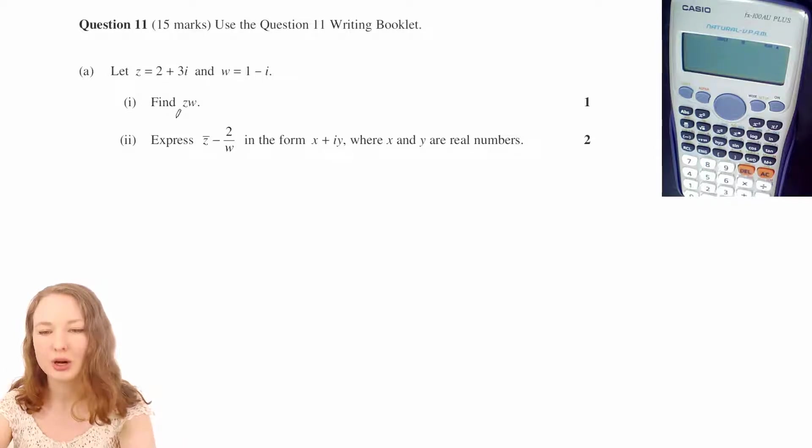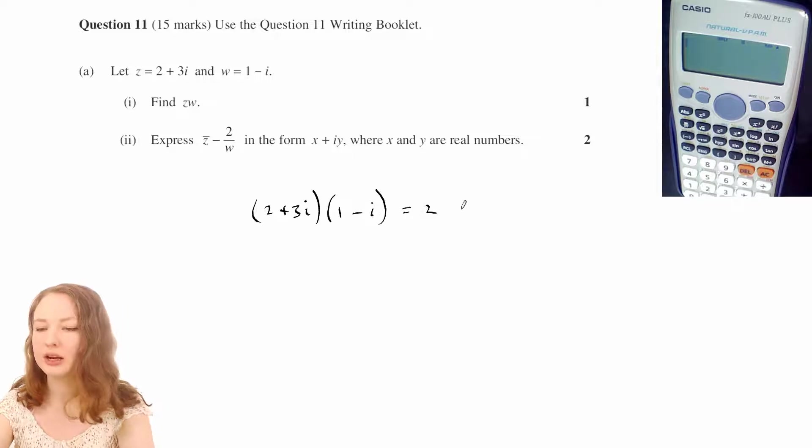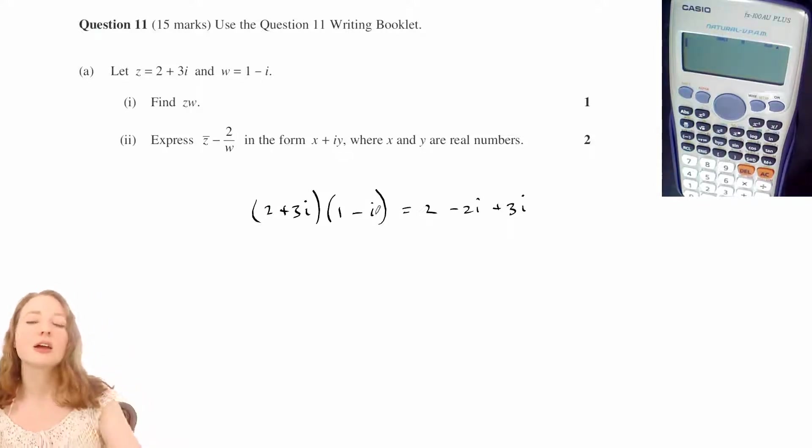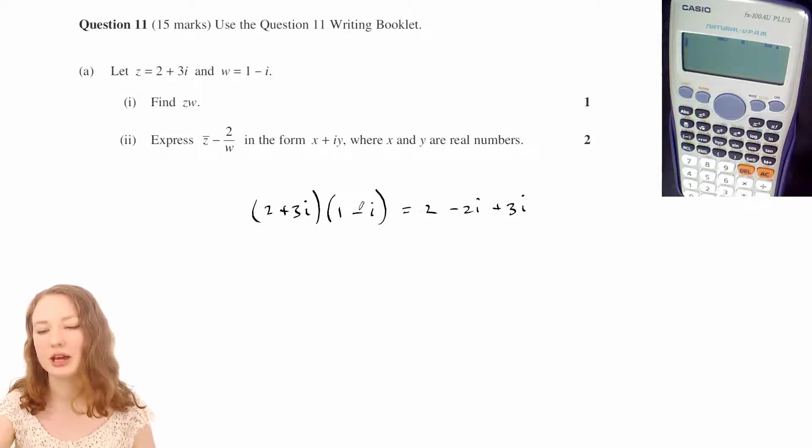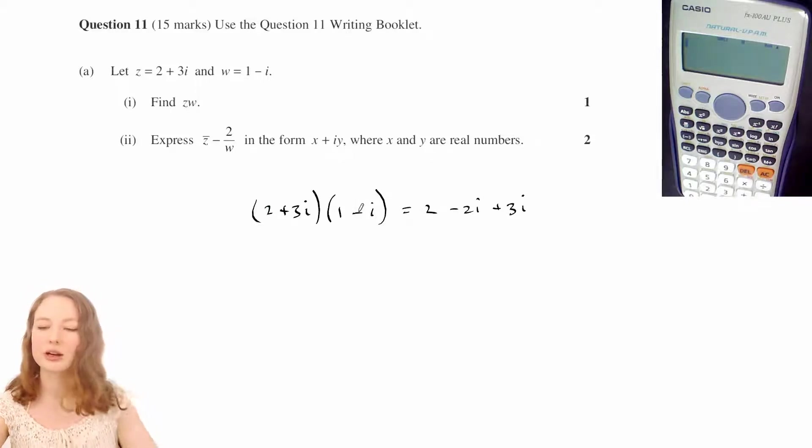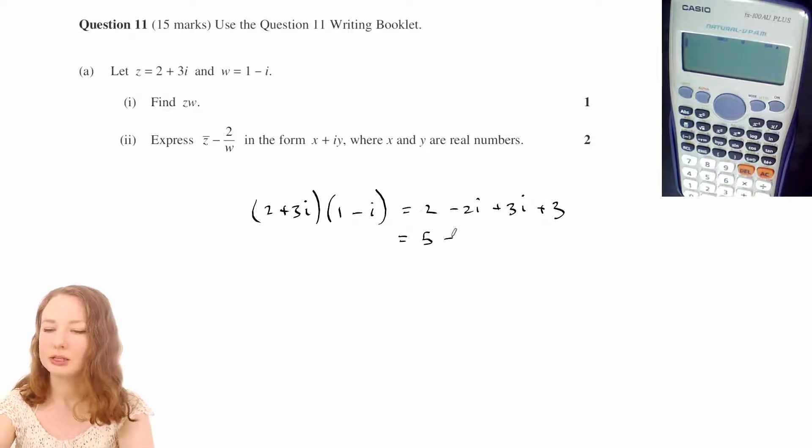So part one, we're looking for 2 plus 3i times 1 minus i. We've got 2 times 1, 2 times negative i, the 3i times 1, and 3i times negative i. Now the i's multiplied together make negative 1 and then the negatives cancel because we've also got the negative there, so that makes plus 3, and then that's 5 plus i.